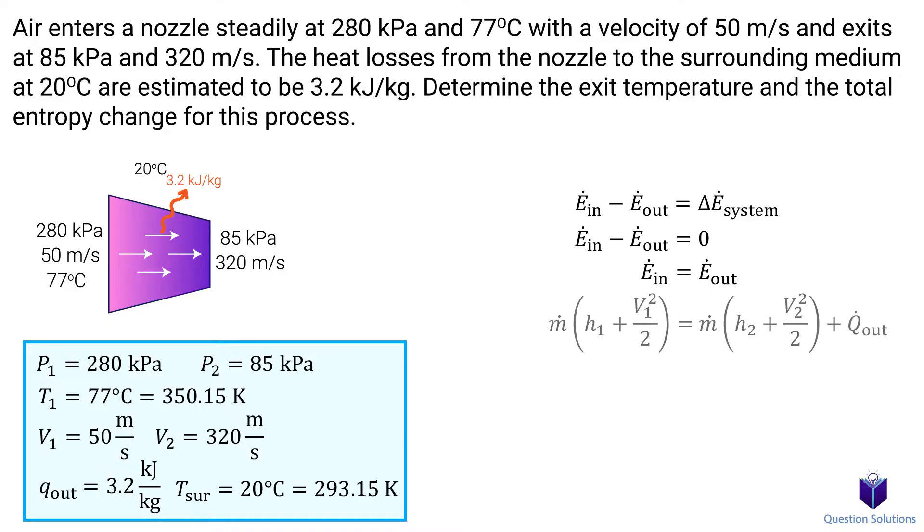For energy in, we have mass flow, enthalpy, and kinetic energy. For energy out, we have the same as energy in, but we also have heat loss since we're told that there is some heat loss to the surroundings. This should be familiar to you from the nozzles video, but if it isn't, I highly encourage you to watch that video to get a quick refresh. Now remember how our heat loss was given per unit mass. So let's divide both sides of the equation by mass flow. Remember that this capital Q is just m dot times heat per unit mass.